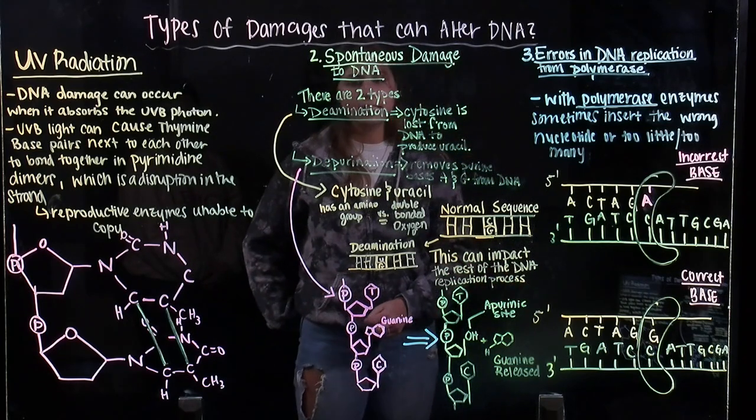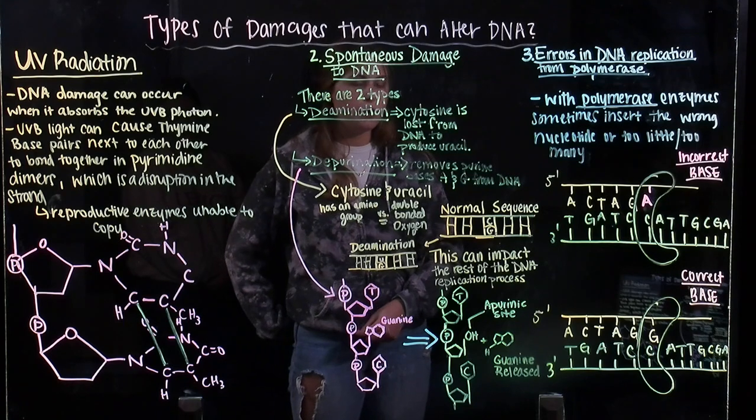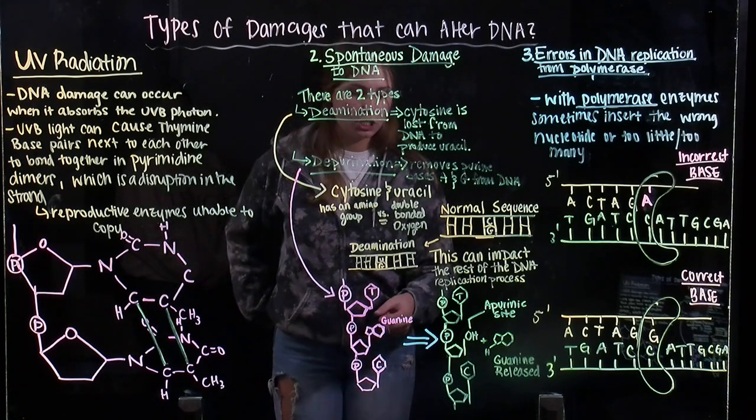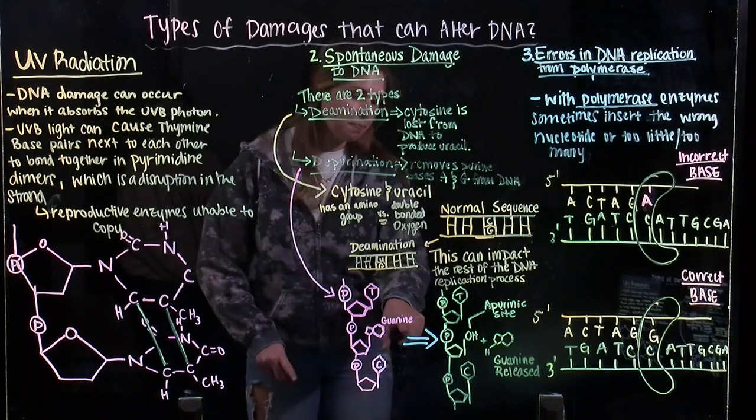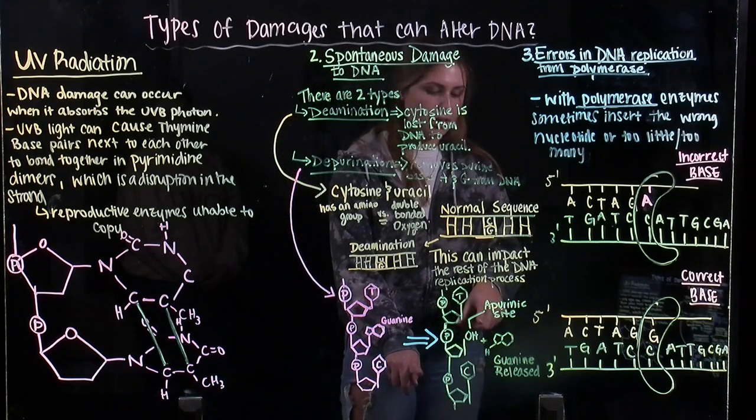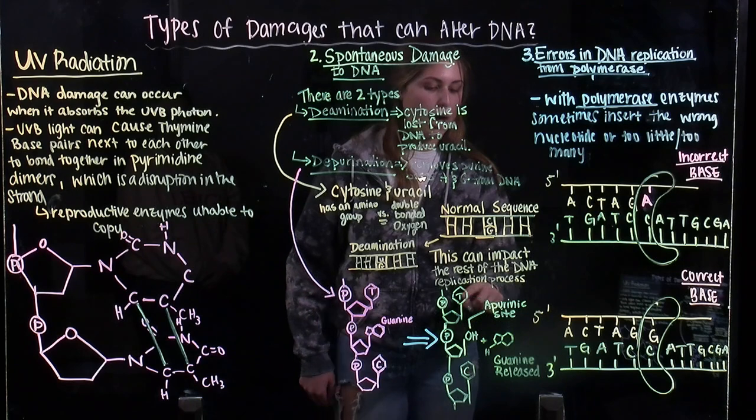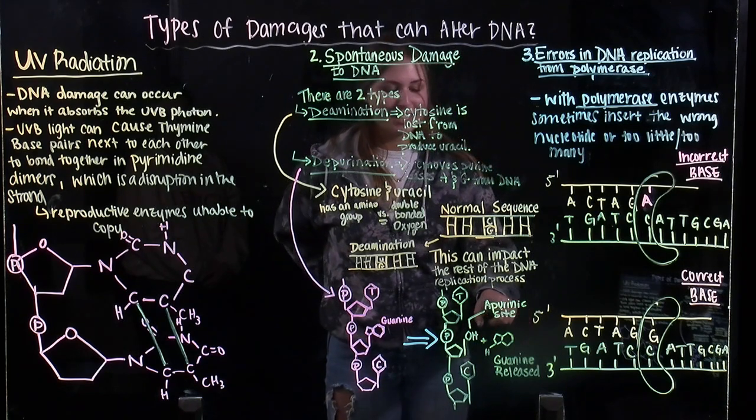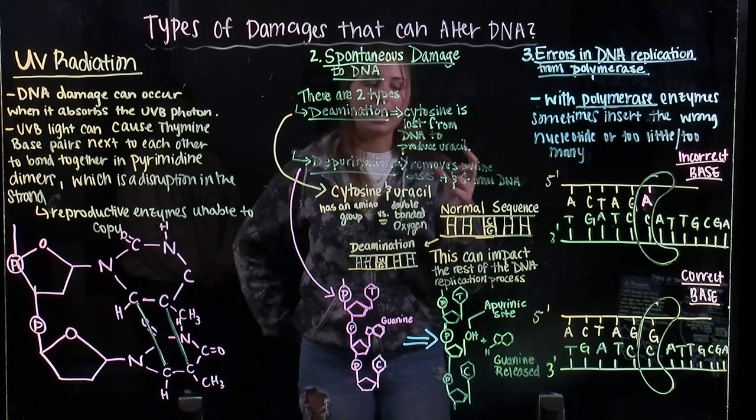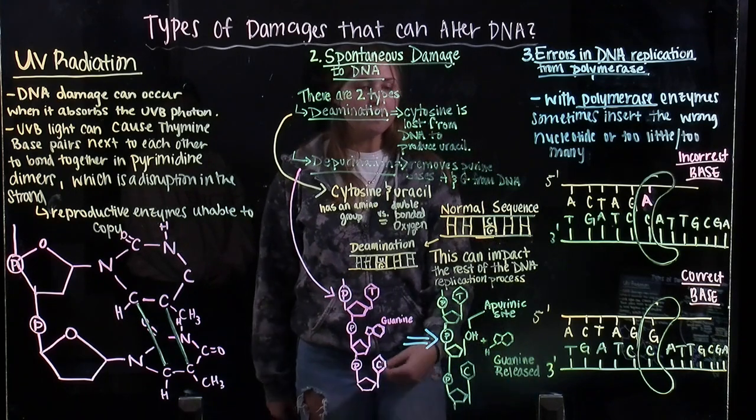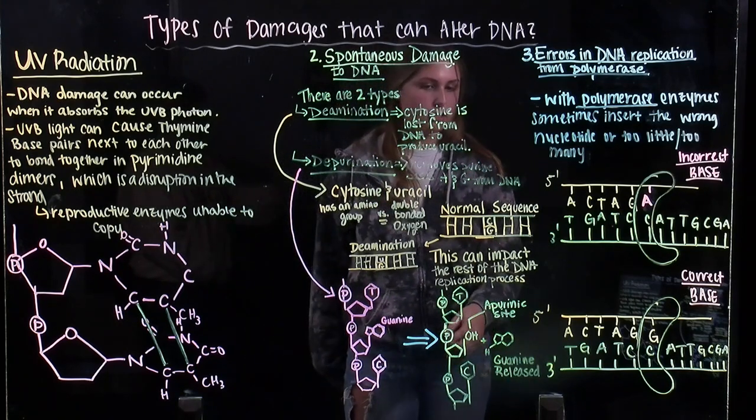Now looking at the second type, depurination, which removes purine bases A and G. In this example, we can see that there's a guanine group here, and after going through depurination, there's an OH apurinic site, which allows the guanine to be released, thus removing it from the DNA sequence.